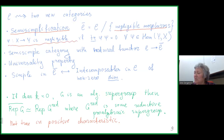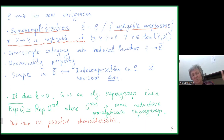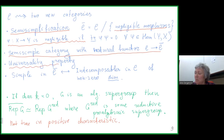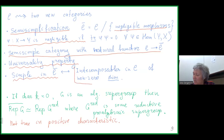Semi-simplification is defined in a much more general setting, but I will talk only in our situation. It is a universal way to start with a tensor category which is not semisimple and construct canonically a semisimple category. We take a quotient of our category by the ideal of negligible morphisms. A morphism f is negligible if for every morphism g in the opposite direction, the composition has categorical trace zero.